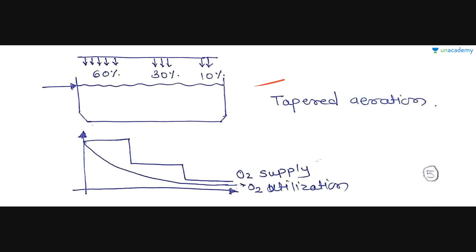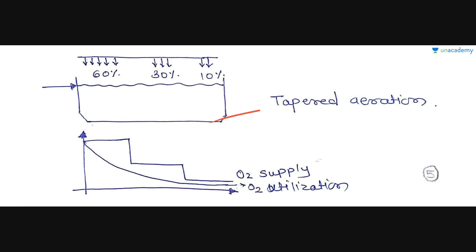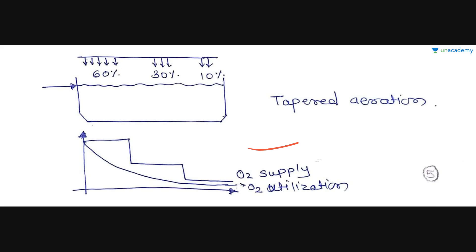In the tapered aeration process, higher oxygen supply is provided at the inlet and it gradually decreases as sewage moves towards the outlet. This process is based on the fact that as mixed liquor progresses through the aeration tank, its air requirement goes on reducing. Such a process therefore helps in ensuring optimal utilization of air in the aeration tank. So option D — tapered aeration — is the correct option for this question.